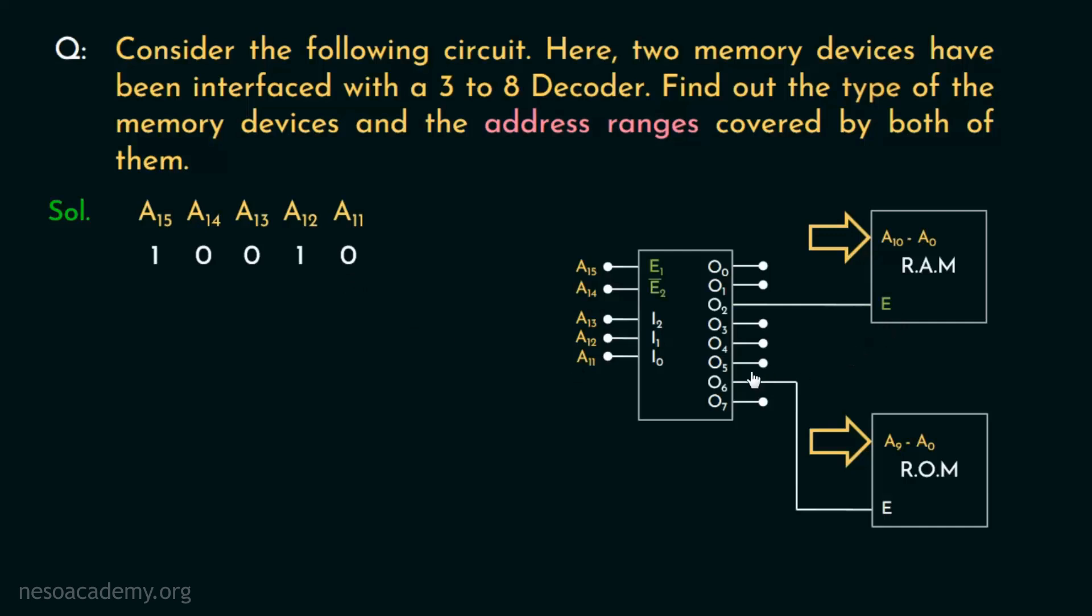So to summarize, feeding 1, 0, 0, 1, 0 through the input lines A15 to A11, we can activate the RAM.